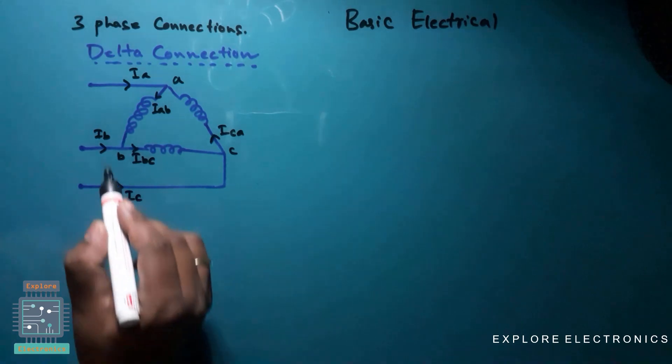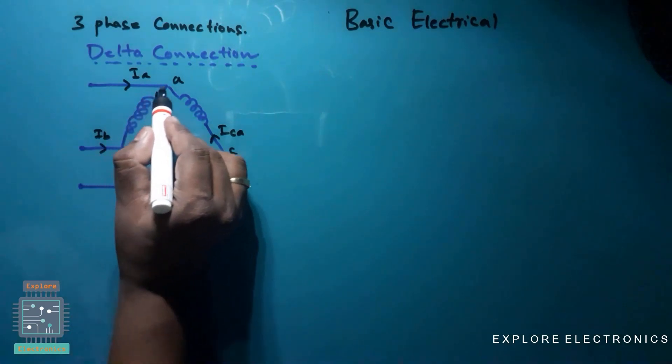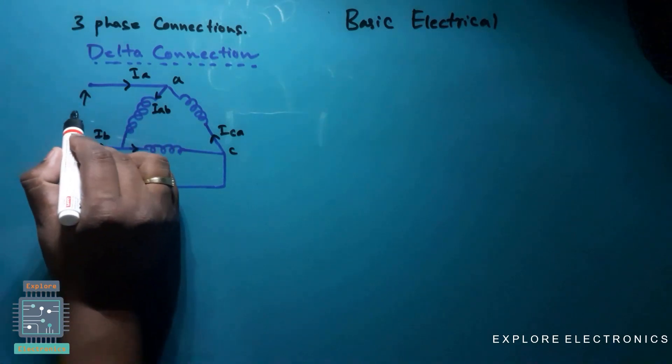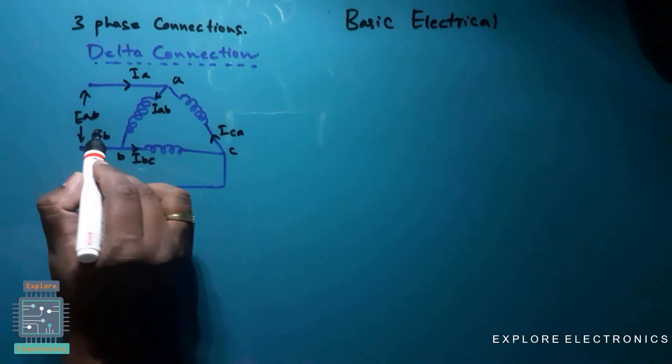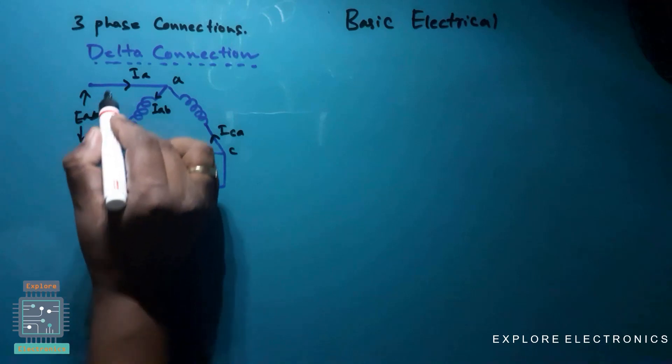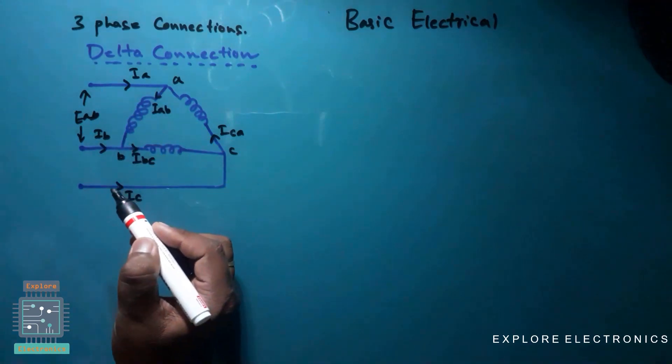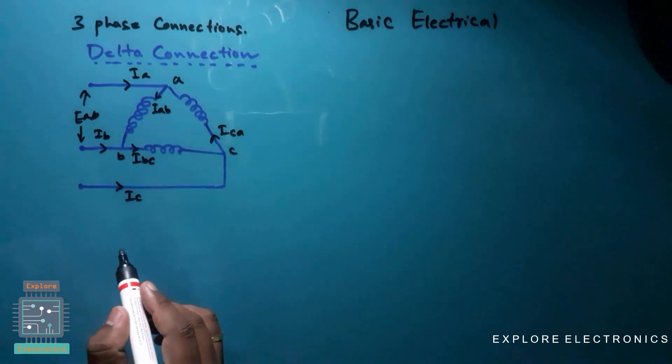Here in the delta connection, if you observe the voltage between these two points, Eab, it is here and it is same if you measure the voltage between the two lines or if you measure the voltage across this phase. So voltages are same here.